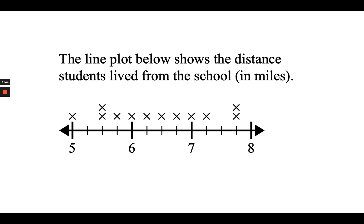Now I can begin to answer questions. The first question is: how many more students lived five and a half miles from school than five miles from school? There were two students at five and a half and one student at five, so two minus one equals one. There was one more student that lived five and a half miles than five miles.